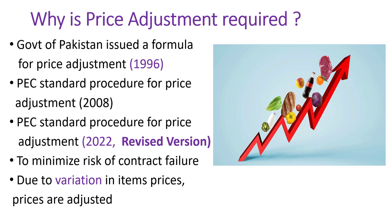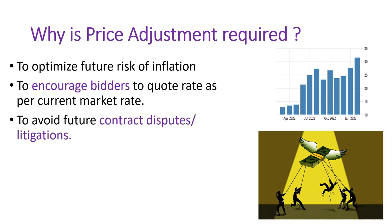PEC — Pakistan Engineering Council — issued standard bidding documents for price adjustment in 2008, and then a revised version was issued in 2022. The motivation behind price adjustment is to minimize risk of contract failure due to variation in asset item prices. This is the most important thing: in future, if there is escalation or de-escalation, disputes between the employer and the contractor will be resolved through this price adjustment. It also encourages bidders to quote rates as per the current market, rather than forecasting for two to three years ahead.